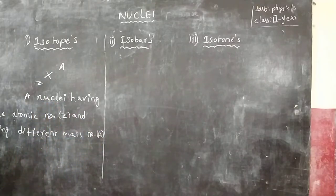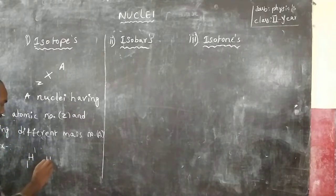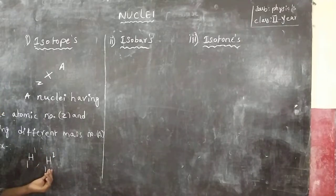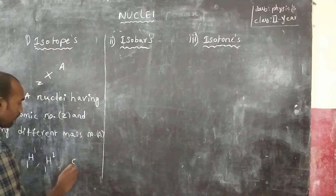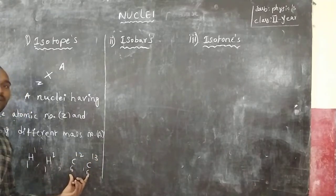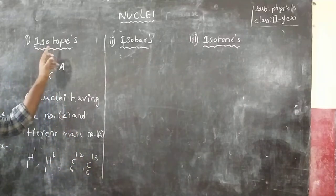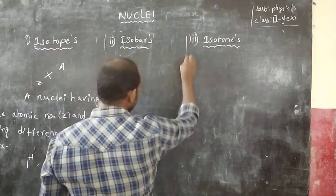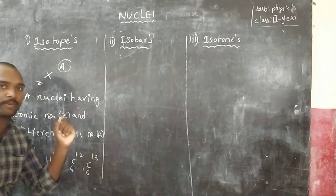For example, consider hydrogen with atomic number 1 and mass number 1 — that is one isotope. In this case the atomic number is the same but the mass number is different. Likewise, carbon-6-12 and carbon-6-13 have the same atomic number but different mass numbers — these are isotopes.